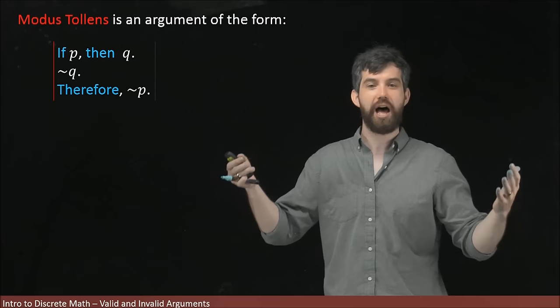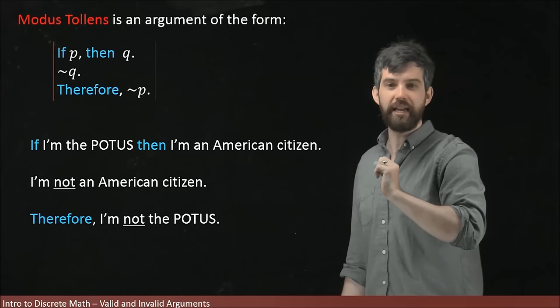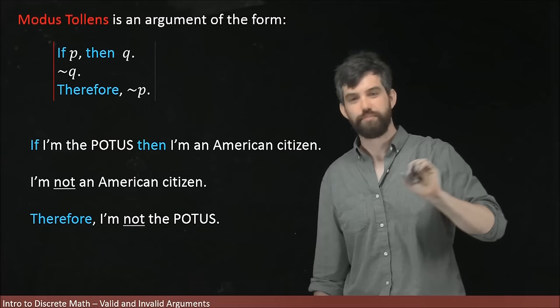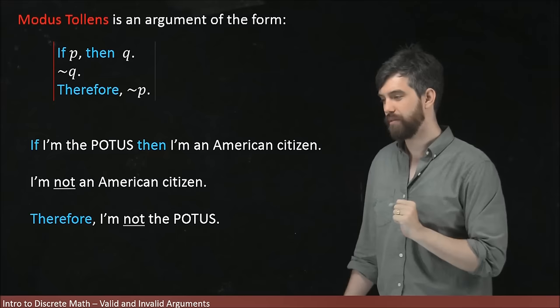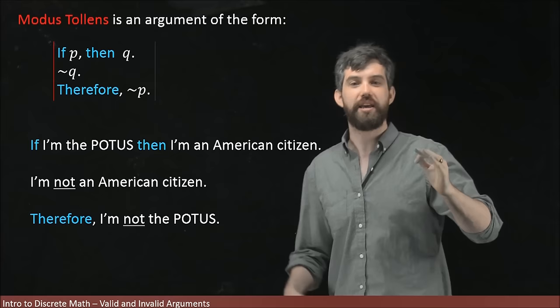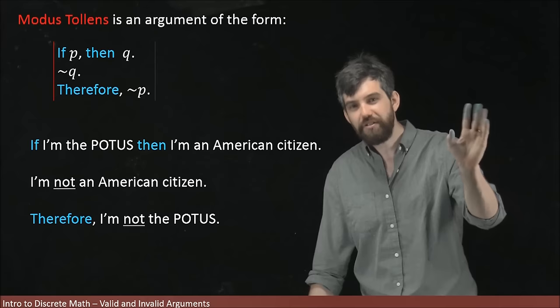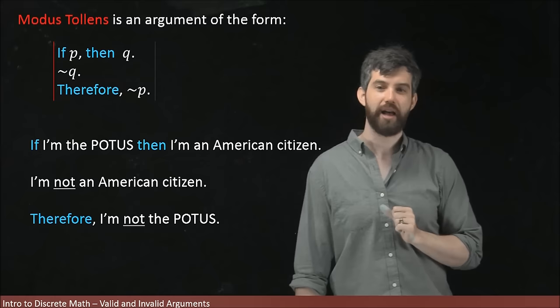Here's my argument form. If I'm the President of the United States, then I'm an American citizen. I am not an American citizen, true fact, I happen to be a Canadian, and therefore I am not the President of the United States. This is not the only way I can prove that I'm not the President of the United States, but it is one argument that is logically valid, and in fact both of these different conditions are going to be true. You have to be an American citizen to be the President of the United States. I am not an American citizen, therefore it must be that I am not the President of the United States.